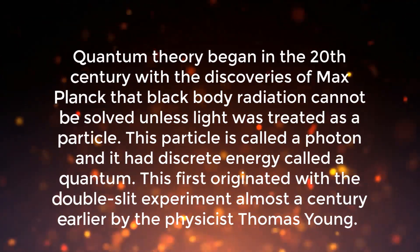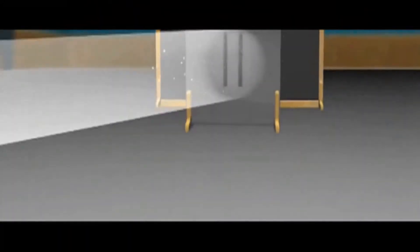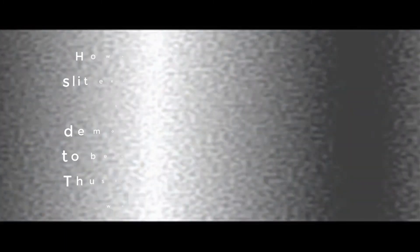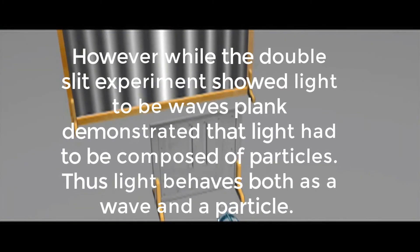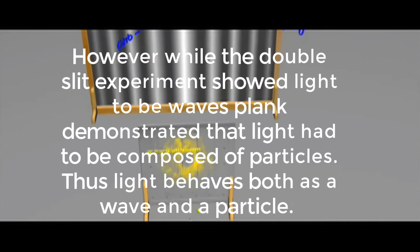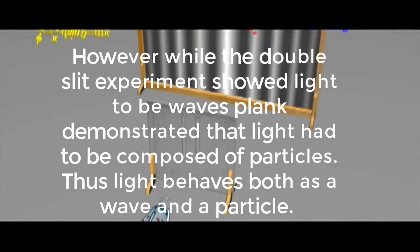This first originated with the double slit experiment almost a century earlier by the physicist Thomas Young. The double slit experiment demonstrates that light sent through a pair of slits in a barrier radiated equally from those two slits. As those waves crossed past each other, they would interfere with each other to form a series of bands behind the slits. If light were a particle, however, it was thought that these series of bands would not exist as no concrete wave fonts would exist to create them. Rather, if they were particles, they would simply form a pair of clumps on the film where the photons were projected through the slits like bullets from a rifle. However, while the double slit experiment showed light to be a wave, Planck demonstrated that light had to be comprised of particles. Thus, light behaved as both a wave and a particle.